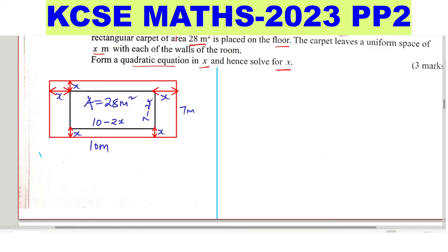So area is given by, we have the length of the carpet, which is 10 minus 2x, multiply by the width, which is 7 minus 2x, and we should get 28.